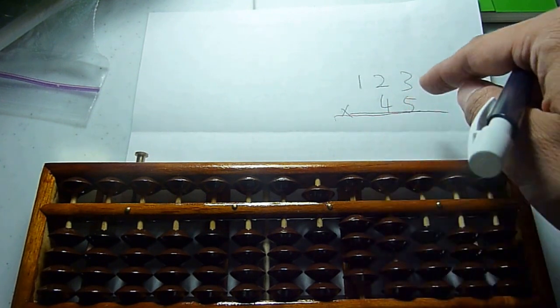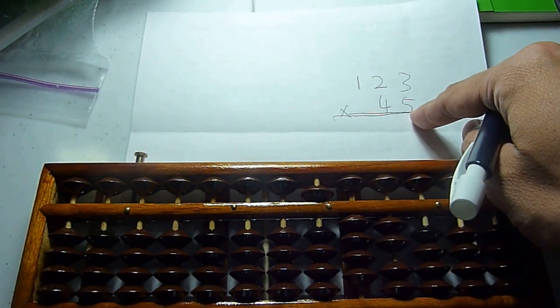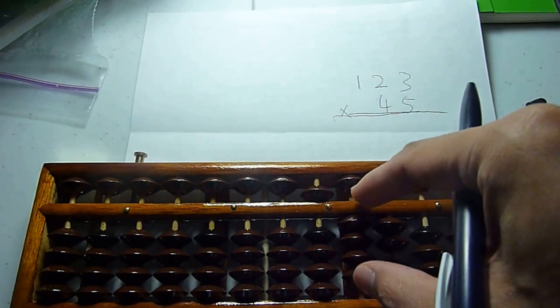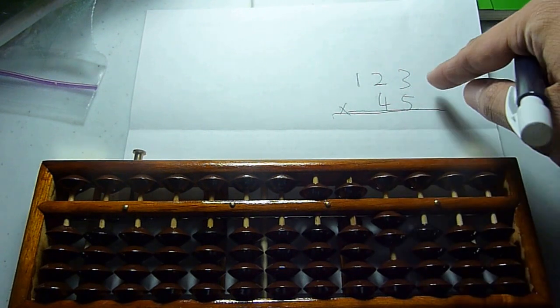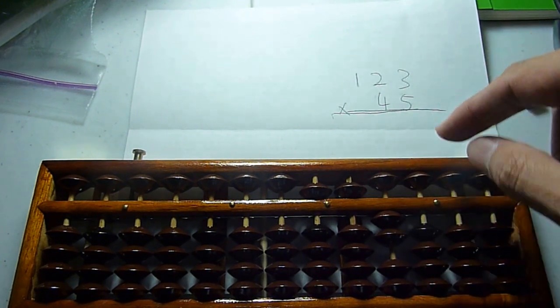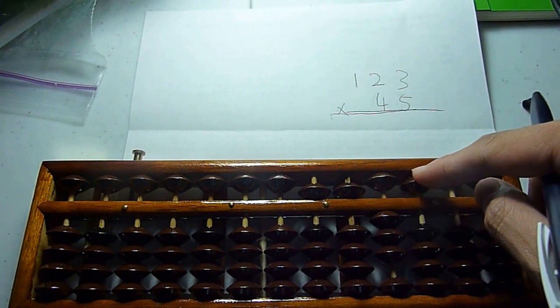Okay. And then two multiplied by five equals one, zero. So that's one, zero. And three multiplied by five is fifteen. So you have one, five.